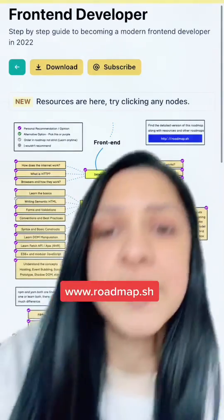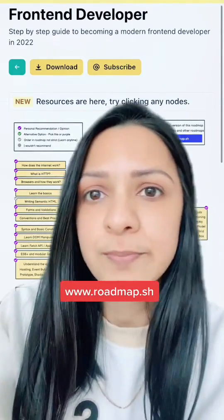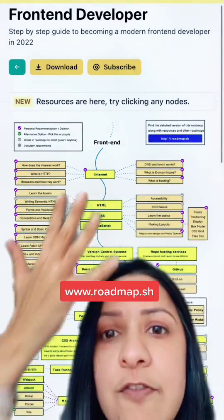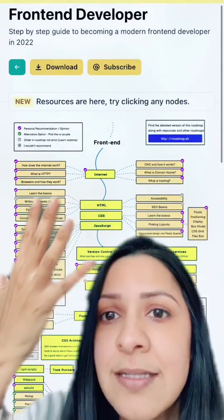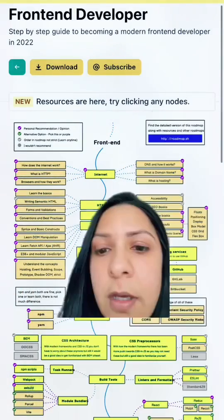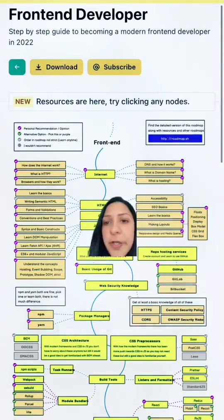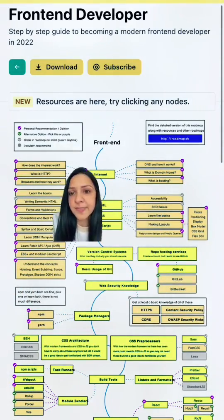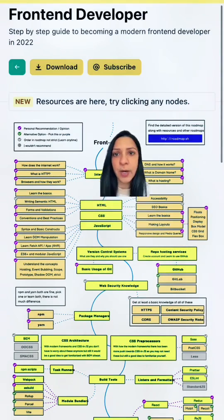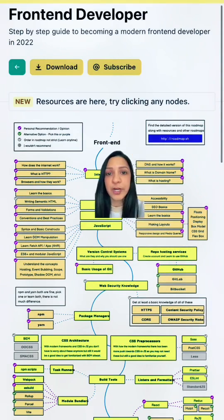It's a website called roadmap.sh and it has these visual guides, almost like a crazy mind map, of all the various concepts that you might want to consider when learning about, for example, front-end development.